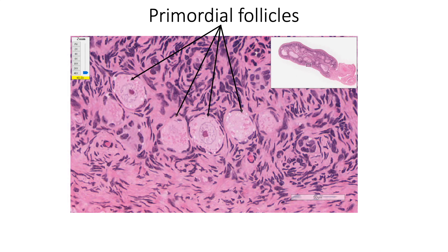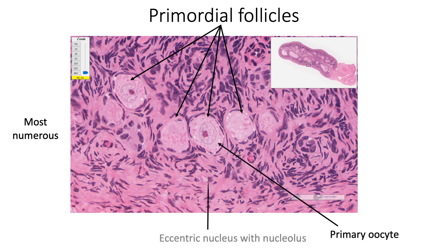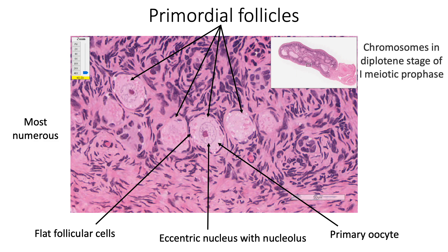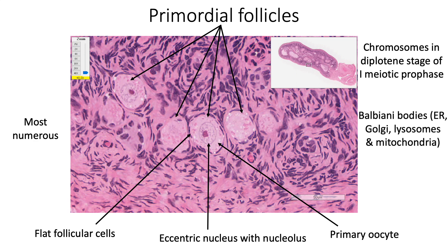Primordial follicles are the most numerous follicles found in the cortex of the ovary. Each contains a central primary oocyte showing an eccentric nucleus with a nucleolus, and this primary oocyte is surrounded by flattened follicular cells. The primary oocyte contains chromosomes arrested in the diplotene stage of first meiotic prophase. The cytoplasm contains Balbiani bodies, which are aggregates of endoplasmic reticulum, Golgi complex, lysosomes and mitochondria, as well as annulated lamellae, which are stacked nuclear envelopes.